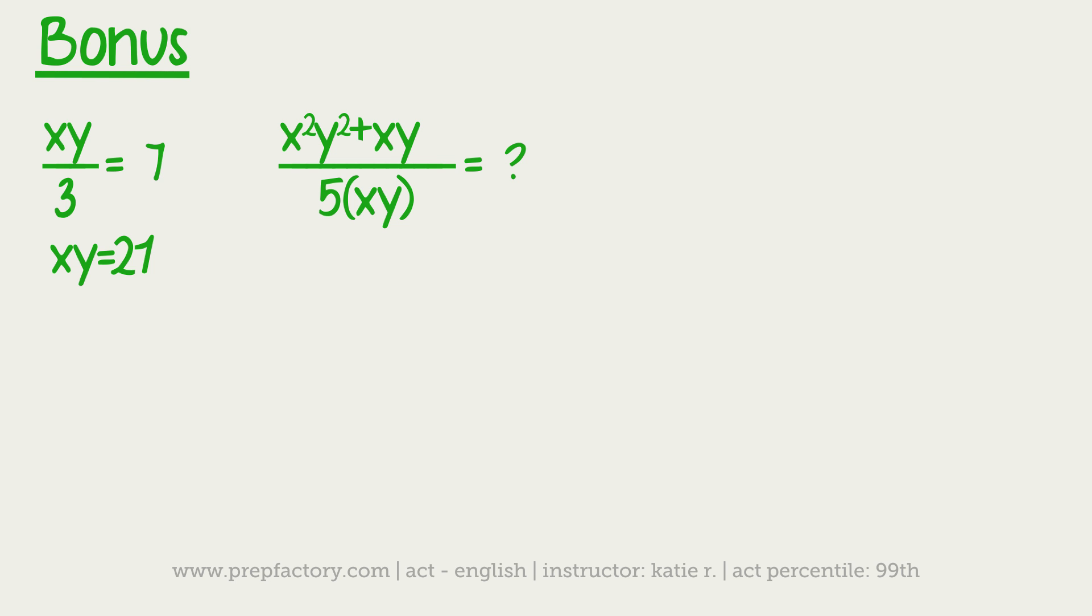Alright, so looking at our second equation, we have a couple obvious instances in which we have an x times y. So I'm going to go ahead and fill in just those parts, and I'll show you what you can do with the rest of it. So x squared times y squared plus, we have an x times y, so 21, and we divide by 5 times 21.